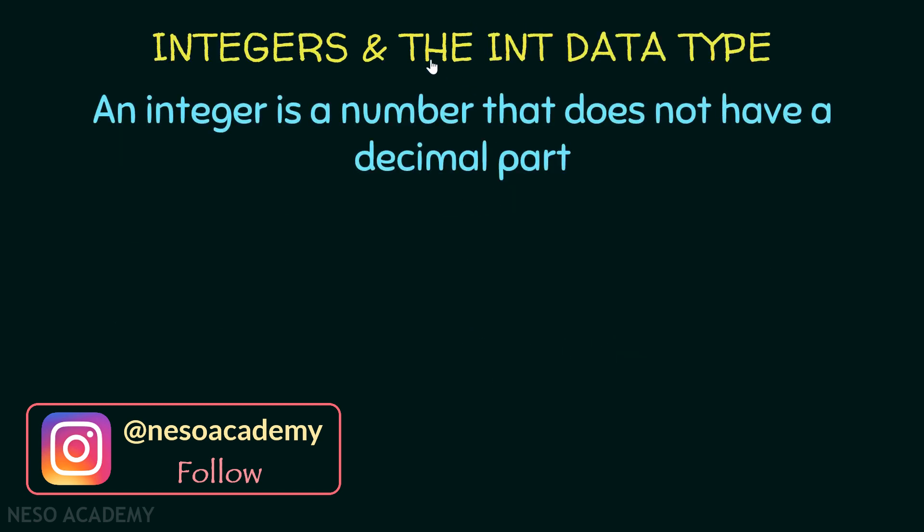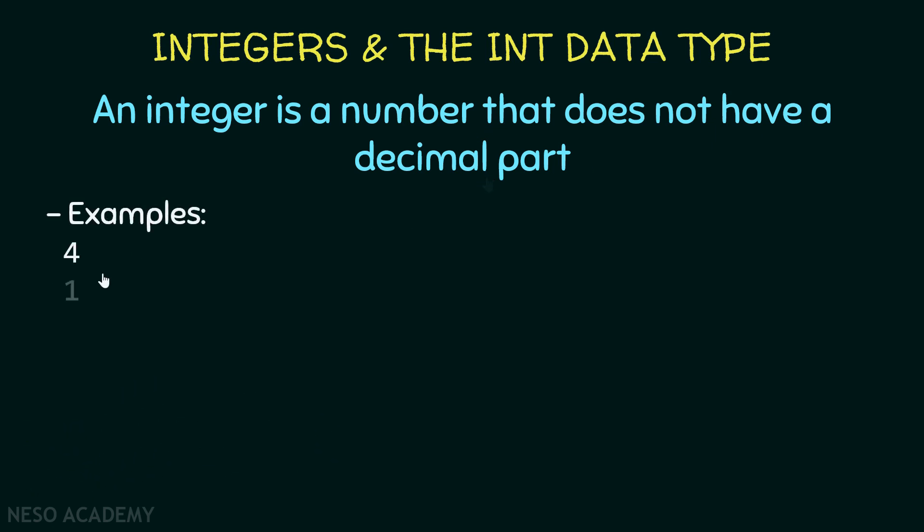First of all, you know that an integer is a number that doesn't have a decimal part, and we have already seen some examples. So how can we work with such numbers in Java? Simply, just like we have a type to work with strings, we have some types to work with integers. And the int data type is a data type that is used to work with integers. So now we can declare a variable of type int and we can store integers inside this variable.